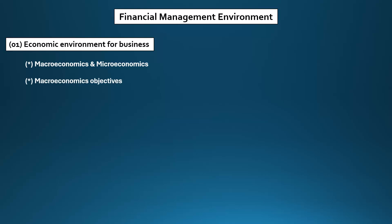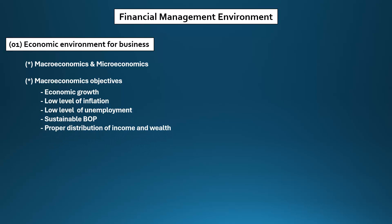The second one is macroeconomic objectives. There are four main objectives and one sub-objective that you should know. The first one is economic growth, second is low level of inflation, third is low level of unemployment, fourth is sustainable balance of payment, and fifth is appropriate distribution of income and wealth. So these are five macroeconomic objectives.